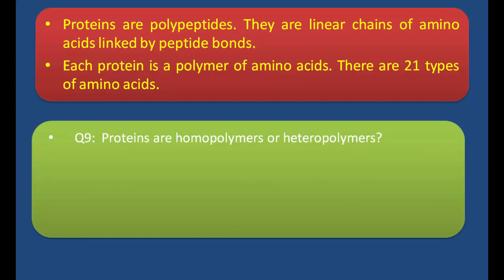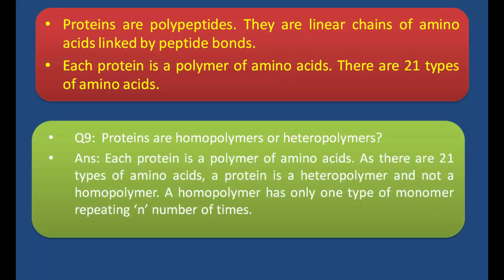Q9: Are proteins homopolymers or heteropolymers? Answer: Each protein is a polymer of amino acids. As there are 21 types of amino acids, a protein is a heteropolymer and not a homopolymer. A homopolymer has only one type of monomer repeating. Since proteins are made up of 21 types of amino acids, they are called heteropolymers; they are not homopolymers because in a homopolymer all monomers are of the same type.